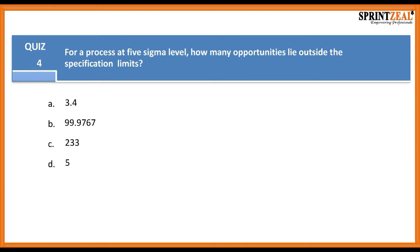Question four: For a process at five-sigma level, how many opportunities lie outside the specification limits? Is it 3.4, 99.9767, 233, or 5?